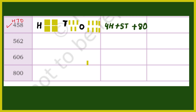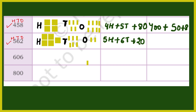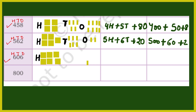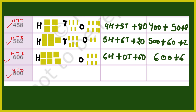Next: 458 — 4H, 5T, 8O = 400 + 50 + 8. 562 — 5H, 6T, 2O = 500 + 60 + 2. 606 — 600, tens के नीचे 0 है तो कुछ नहीं, और 1s के नीचे 6 है: 6H + 0T + 6O = 600 + 6. 800 — इसमें सिर्फ 100 के नीचे 8 है, 10s और 1s के नीचे 0 है: 8H + 0T + 0O = 800.